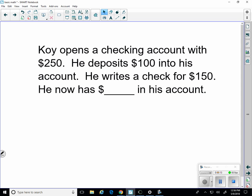Koi opens a checking account with $250. He deposits $100 into his account. He writes a check for $150. He now has how much? So we'll assume that we're talking about after his check clears.